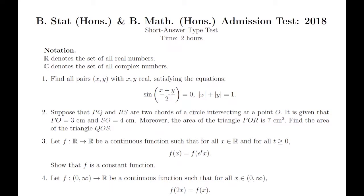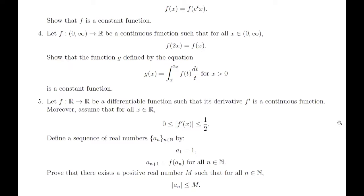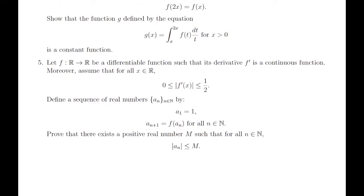Welcome to another video of the B-Stat Beam 2018 series. We'll be discussing problem number five. The problem says you have a differentiable function whose derivative is continuous, and for all x, |f'(x)| is between 0 and 1/2. You have a real sequence aₙ where a₁ = 1 and aₙ₊₁ = f(aₙ) for all n in ℕ. We have to prove there exists a positive real number M such that for all n, |aₙ| ≤ M.